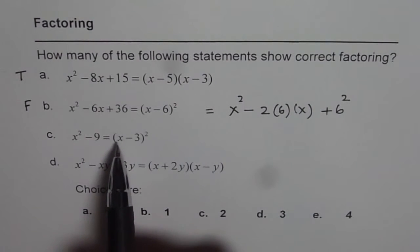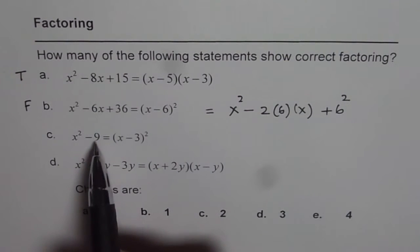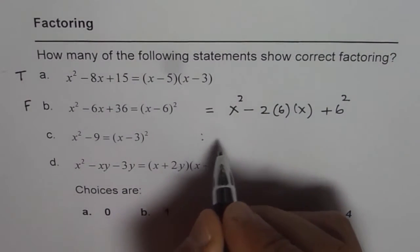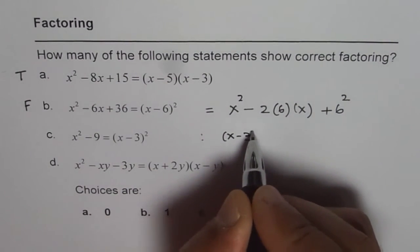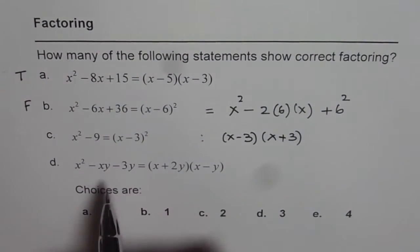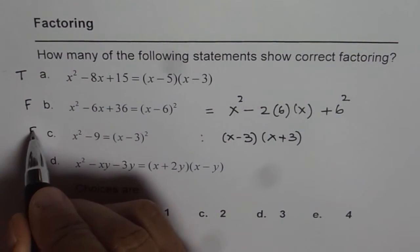Now here we have a² - b². So actually the factor of this should have been (x-3)(x+3), not (x-3)². So this is also false.